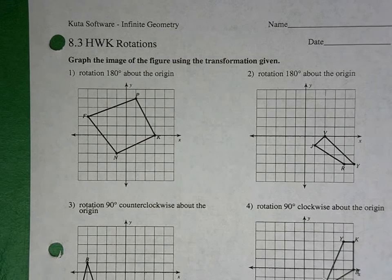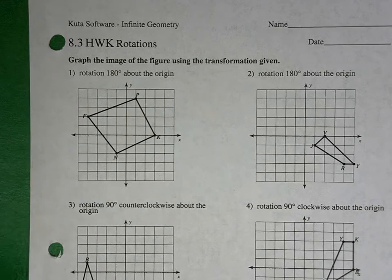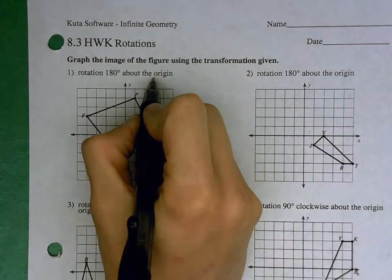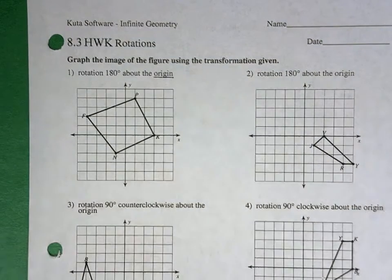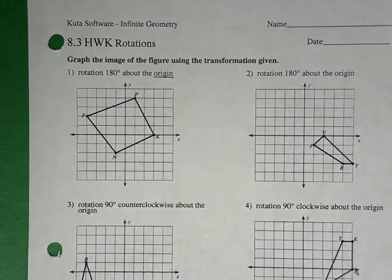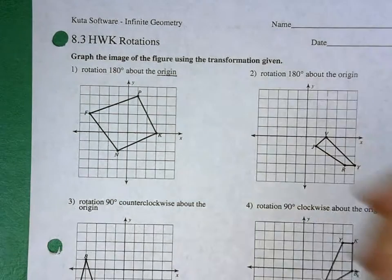With a rotation, rotation means to turn, and we're always going to be turning about some sort of point of rotation. In number one here, we're going to be turning around the origin, and then we're going to be turning some number of degrees. The ones we're going to be looking at are 180, 90, and 270.